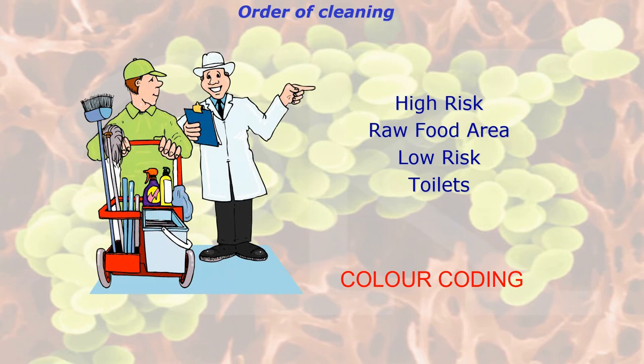The order of cleaning: always start with the high risk food area, then the raw food area, then the low risk, then toilets. It's best to use a colour coding system for cleaning — totally separate buckets and mops for the toilet area compared to everywhere else. For example, red mops and buckets for the toilet area and yellow for all the other areas.